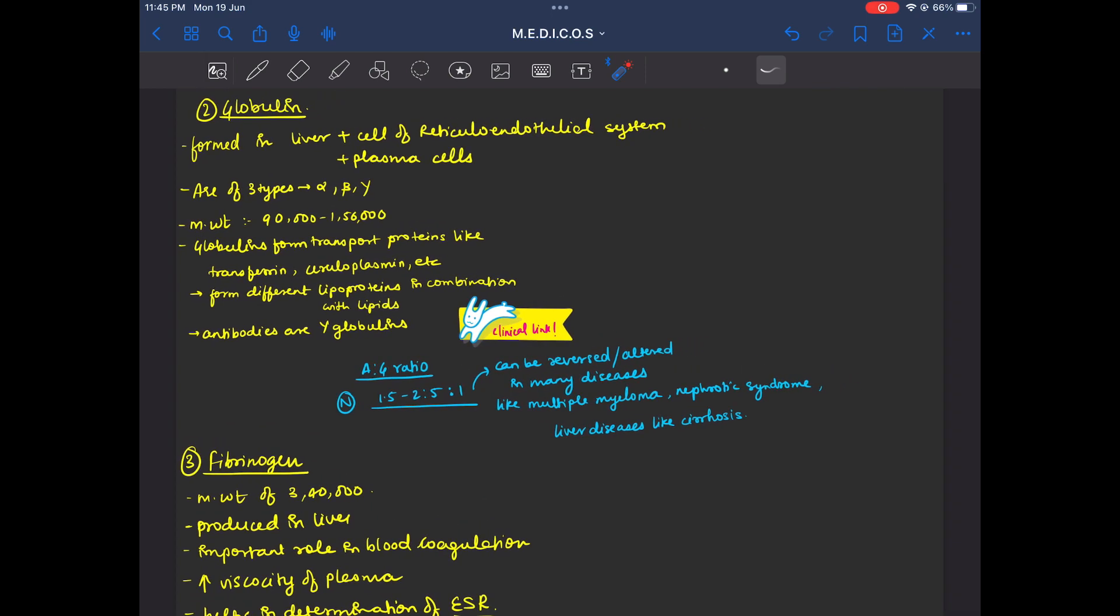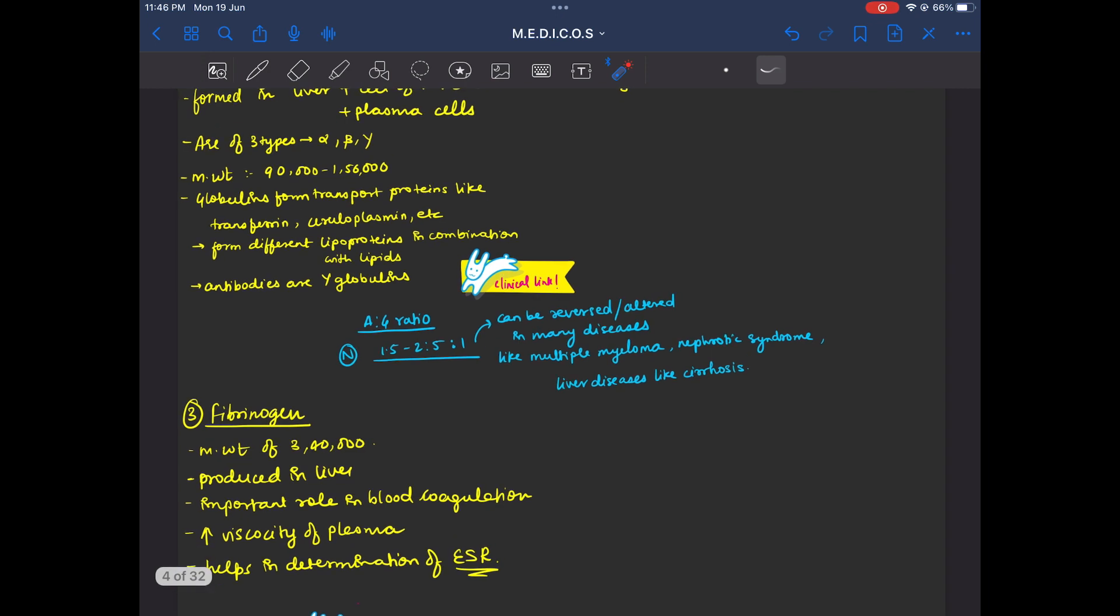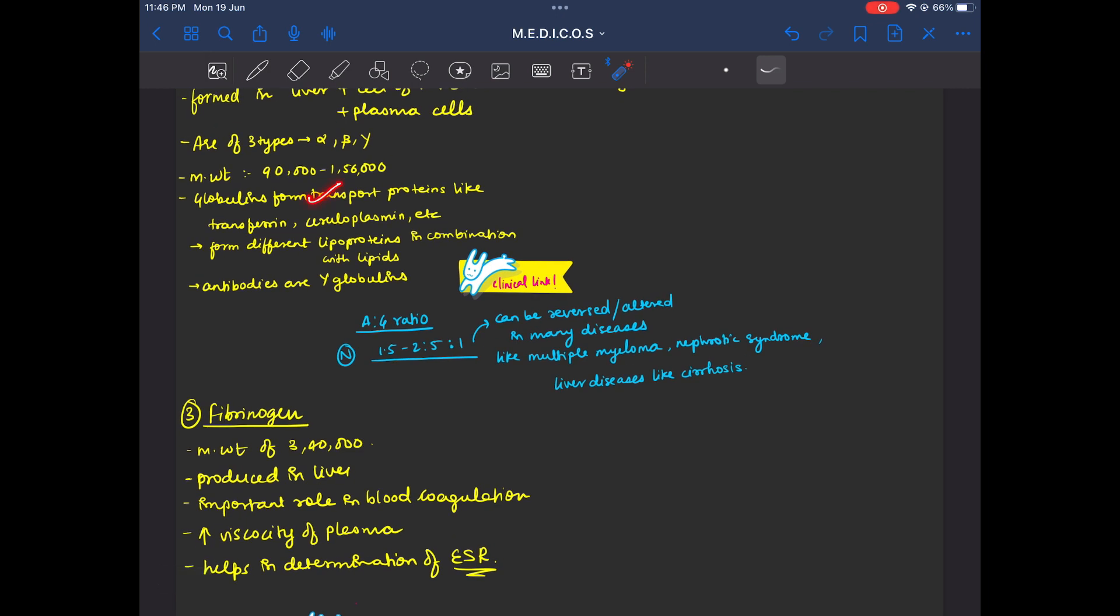There are three types: Alpha, beta and gamma. Its molecular weight is more than albumin but less than fibrinogen. Globulins, what is the work of globulins? They act as transport proteins, they form lipoproteins and they form antibodies.